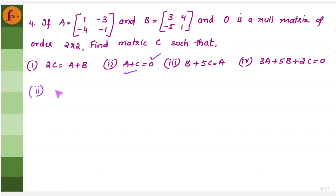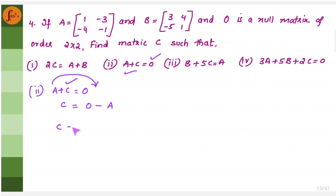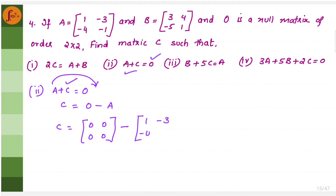For the second problem, A plus C is equal to O. We have to find matrix C, so we keep matrix C on the left hand side and shift everything to the right hand side. It will be C equals O minus matrix A. O is a 2 by 2 zero matrix. Matrix A is: 1, minus 3, minus 4, minus 1.